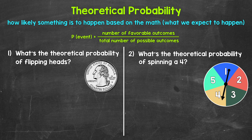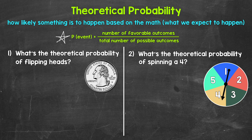Let's jump into our examples, starting with number one: what's the theoretical probability of flipping heads? This is the formula we use for theoretical probability. We have P for probability, and then in parentheses, we have the event — whatever we are finding the probability of. The probability of an event equals the number of favorable outcomes over the total number of possible outcomes. Favorable outcomes are all the ways the event can happen; total possible outcomes is the total number of things that can happen.